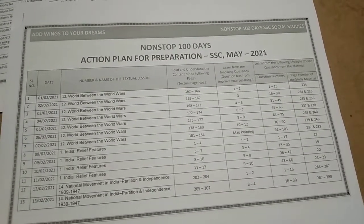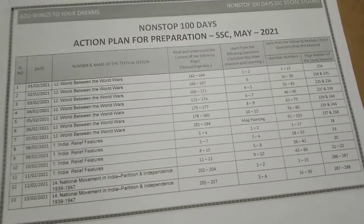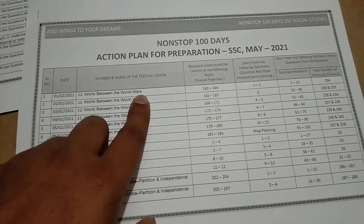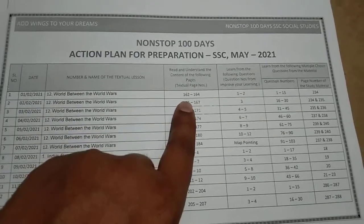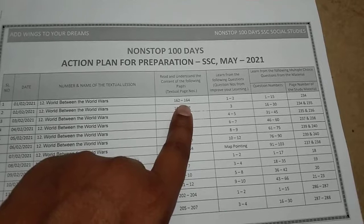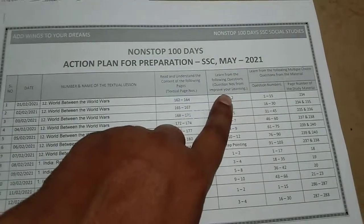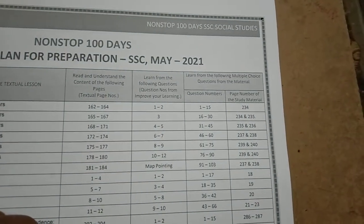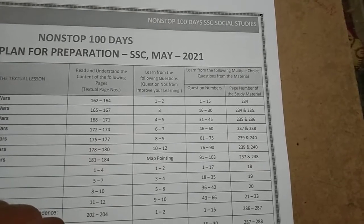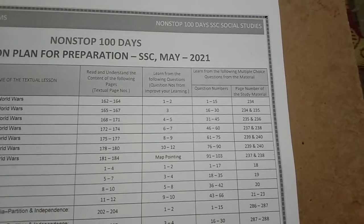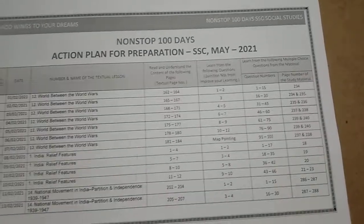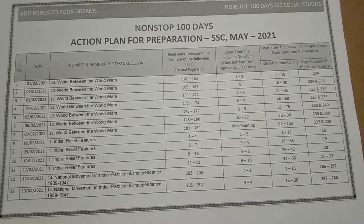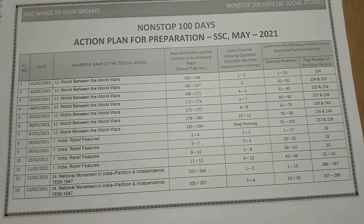That is the non-stop 100 days social studies action plan. Starting from day 1, we have chapter number 12, 'World between the World Wars', including textbook page numbers which are given here. You have to learn from the following questions under 'Improving Your Learning', and also multiple choice questions from the study material, question numbers 1 to 15, with page numbers also provided. That is lesson number 12, 'World between World Wars'. Go through this non-stop 100 days action plan.